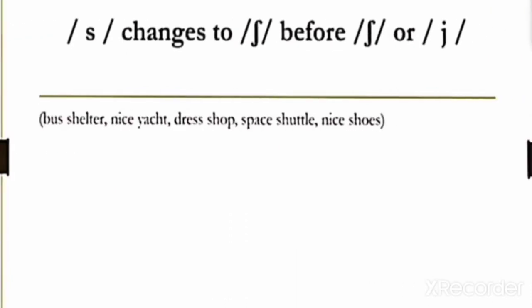Next rule is if /s/ sound comes before /ʃ/ or /j/ sound. These are all, these both are symbols of /ʃ/ sound and /j/ sound. /j/ is the symbol of /j/. So it will change to /ʃ/ sound, like bus shelter, nice yacht, dress shop, space shuttle, nice shoes.